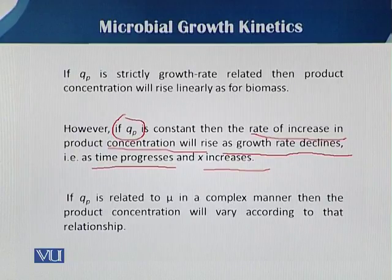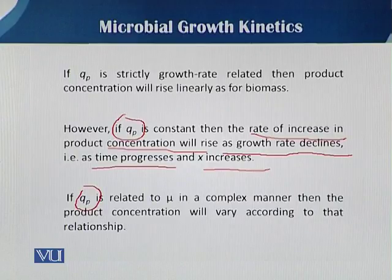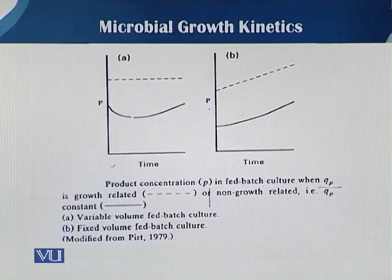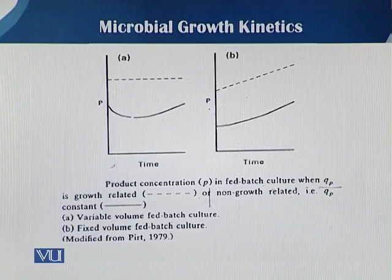If qp is related to mu (the specific growth rate) in a complex manner, then the product concentration will vary according to that relationship. In the diagram, there are two different relationships, A and B. A deals with the variable volume and B deals with the fixed volume. Both diagrams are as modified and reported by Pirt, 1979.